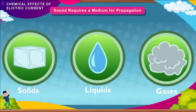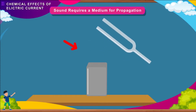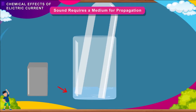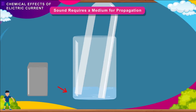Here is an activity to show that sound is produced by vibrations. Take a tuning fork, a rubber pad, and a beaker of water. Strike the tuning fork against the pad and touch the surface of the water. You will notice that waves are produced in the water due to the vibrating fork. As vibration is produced by the tuning fork, a humming sound is also produced. Thus, it is clear that vibrations produce sound.